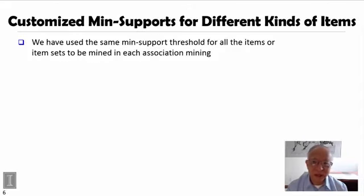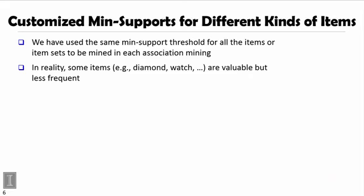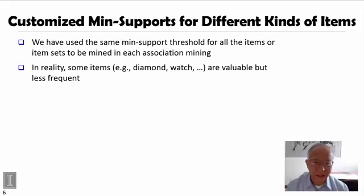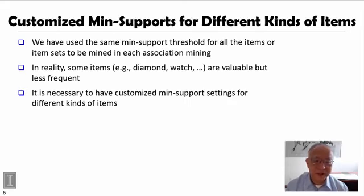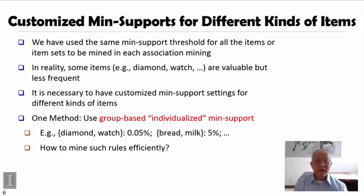Another interesting thing is that different kinds of items inherently may need different support thresholds. For example, at Walmart you may see a diamond watch or some expensive things — they are more valuable but sold less frequently — while milk and bread are sold very frequently. So if we set minimum support for all items using the same threshold, the valuable items may be easily missed. It is necessary to have customized minimum support settings for different kinds of items, using group-based individualized minimum support. For example, group diamond watches and expensive things and set lower minimum support, while for milk and bread set a higher minimum support threshold.